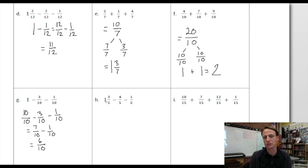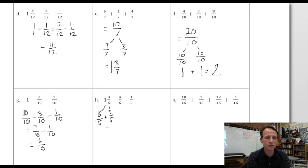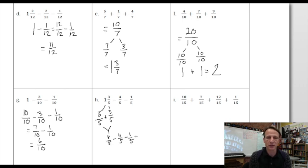This one is a little tricky. We have one and three fifths and need to take away four fifths — but we can't take four away from three. So, the one whole is five fifths, plus the three fifths we already have: that's eight fifths altogether. Now we subtract: eight fifths minus four fifths is four fifths, then subtract one more fifth, and that leaves three fifths. There we go!